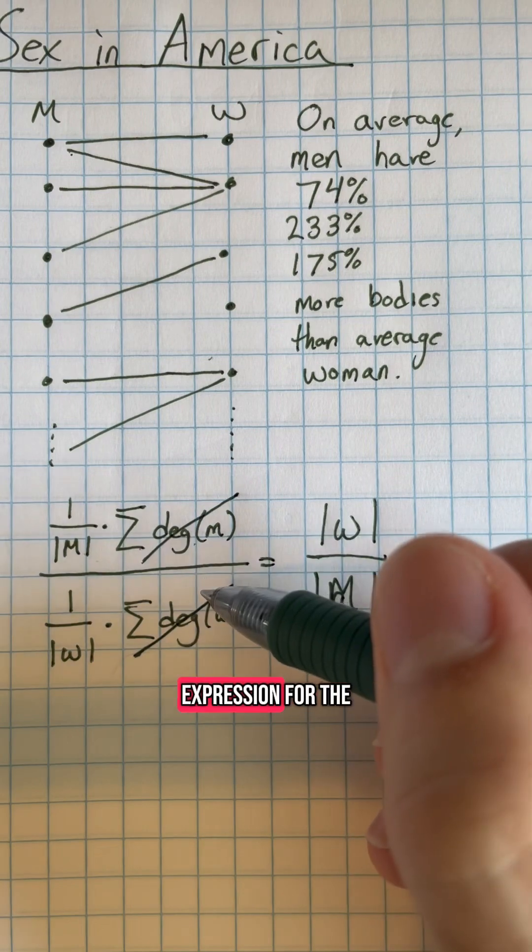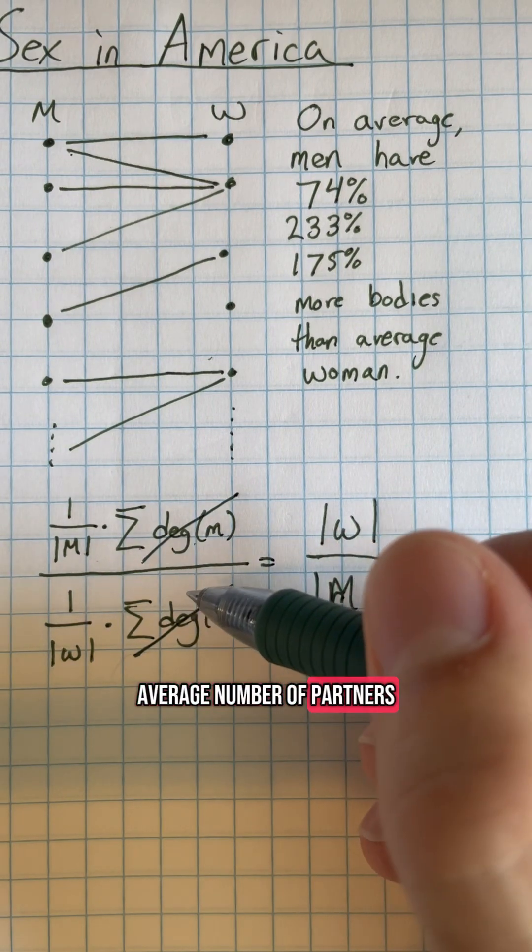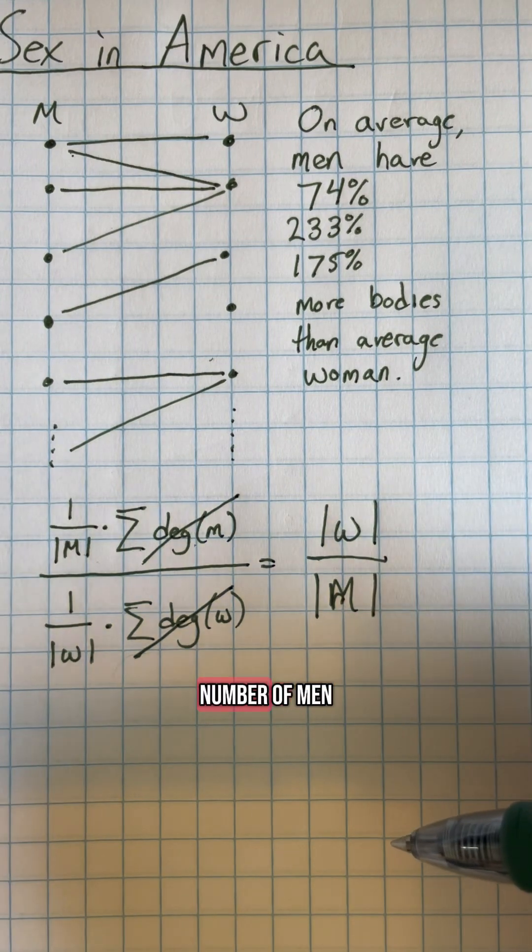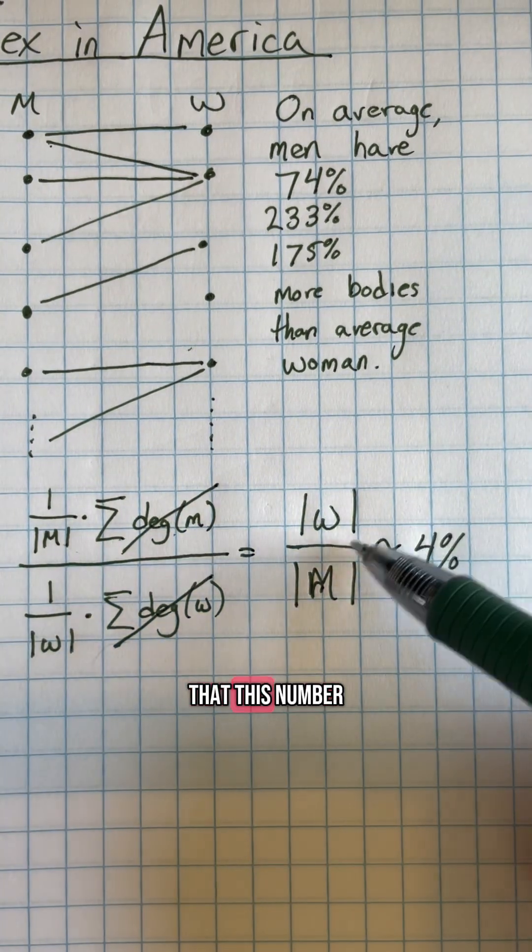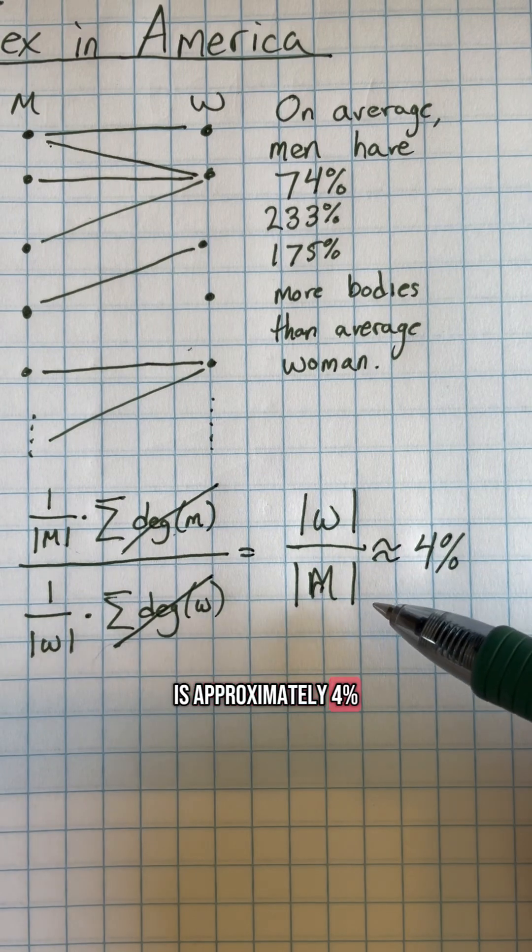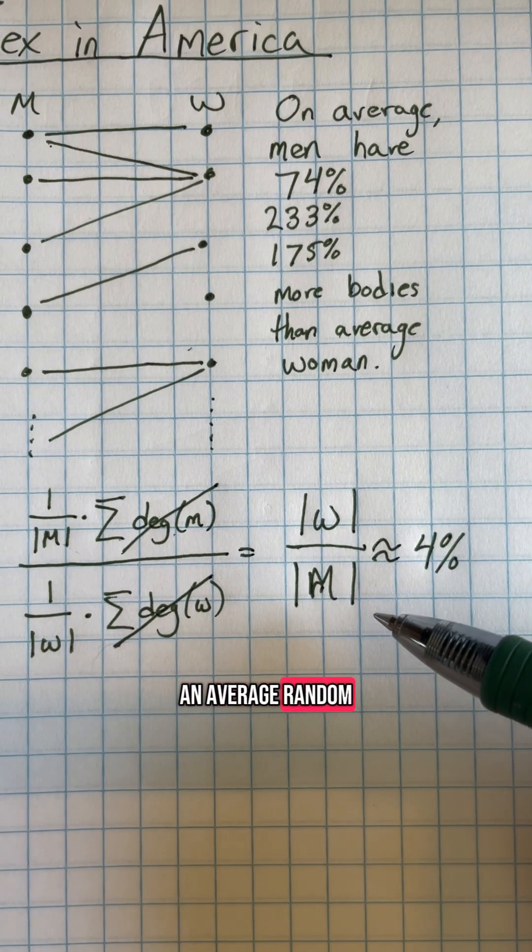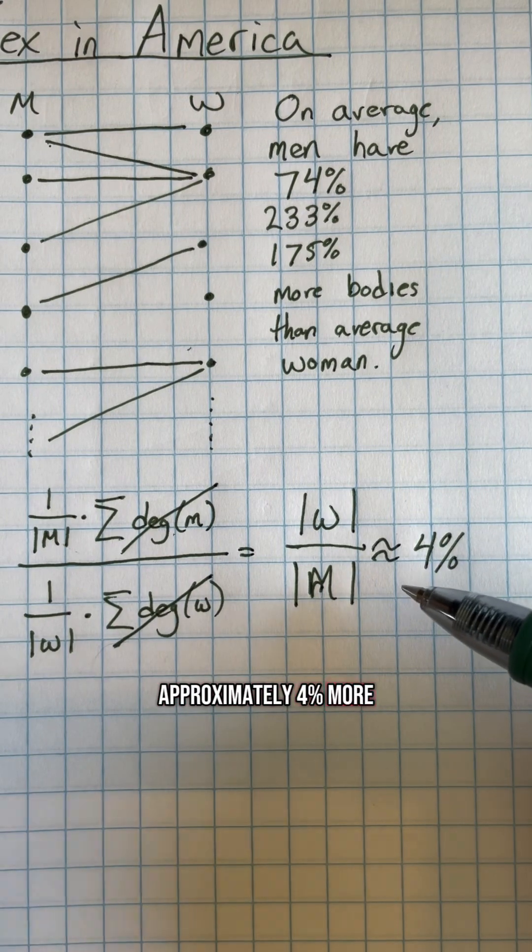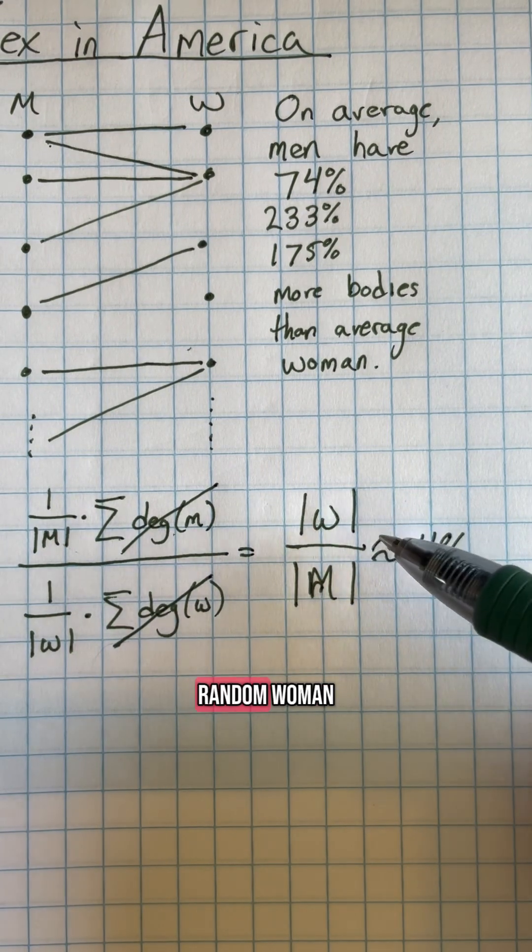As such, our expression for the average number of partners simplifies to just the number of women divided by the number of men. Using census data, we can see that this number is approximately 4%. If you grab an average random man in the United States, they would have approximately 4% more sexual partners than an average random woman.